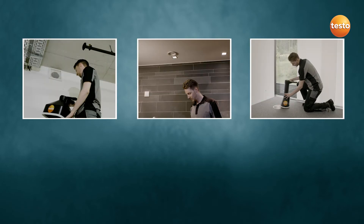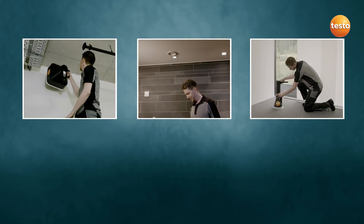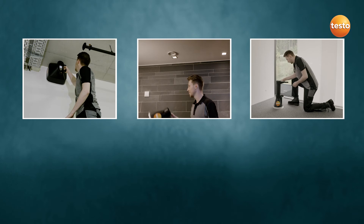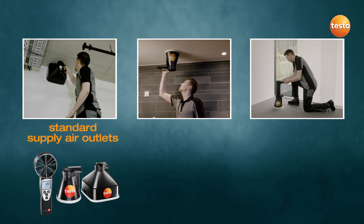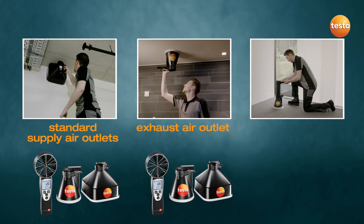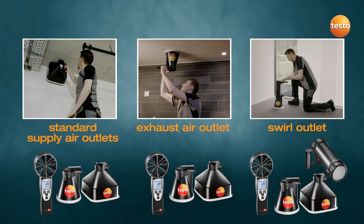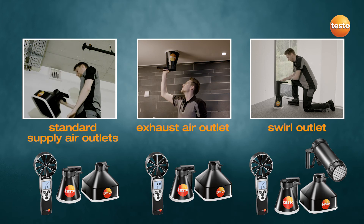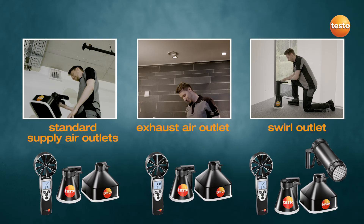Let's summarize which measuring tasks you can carry out with the Testo 417. One: measure faster at standard supply air outlets. Two: achieve accurate values at exhaust air outlets. Three: achieve utmost accuracy at swirl outlets, even with turbulent airflow.